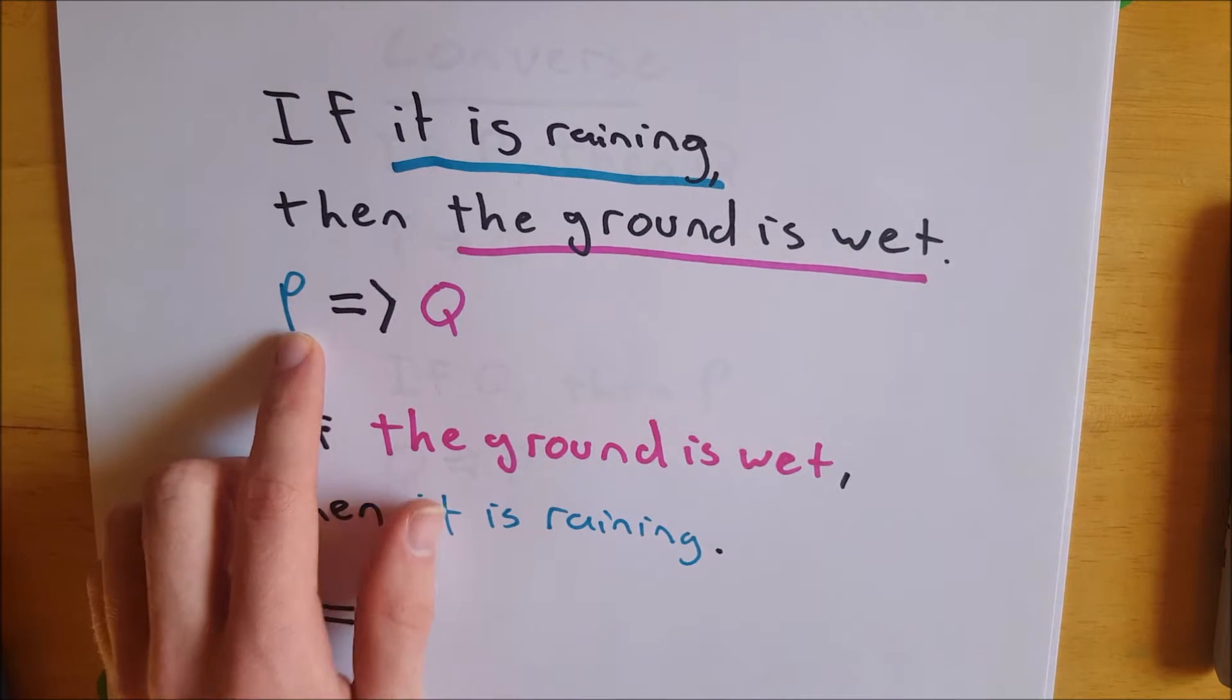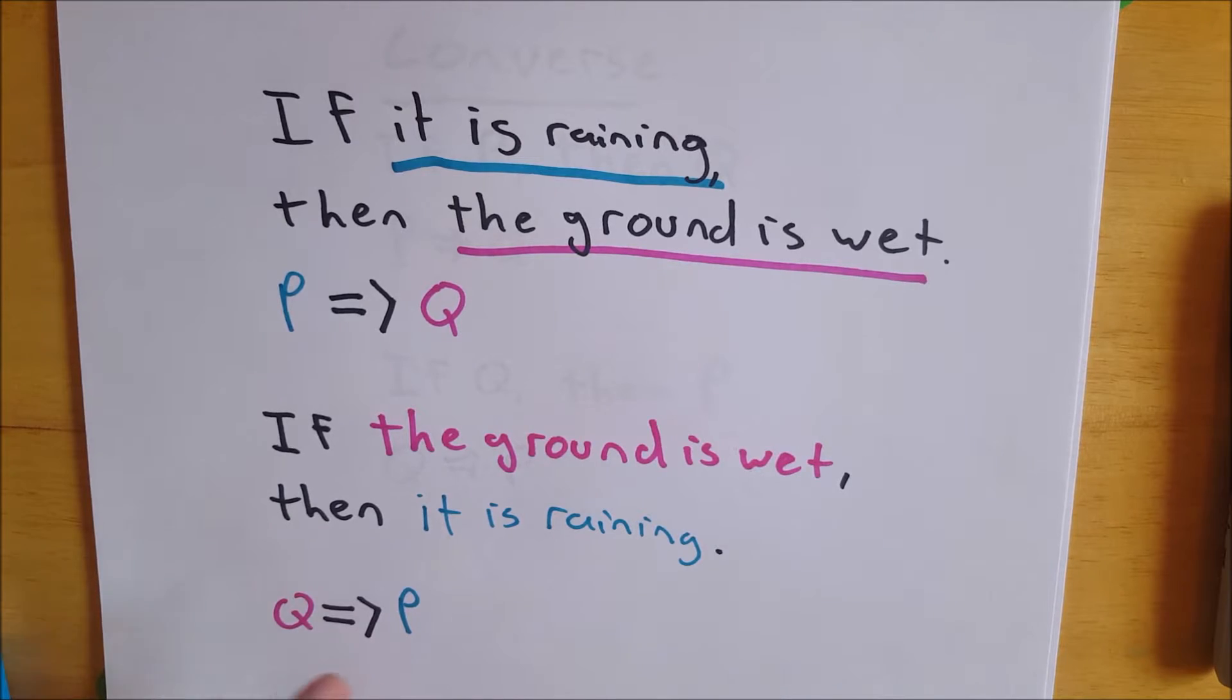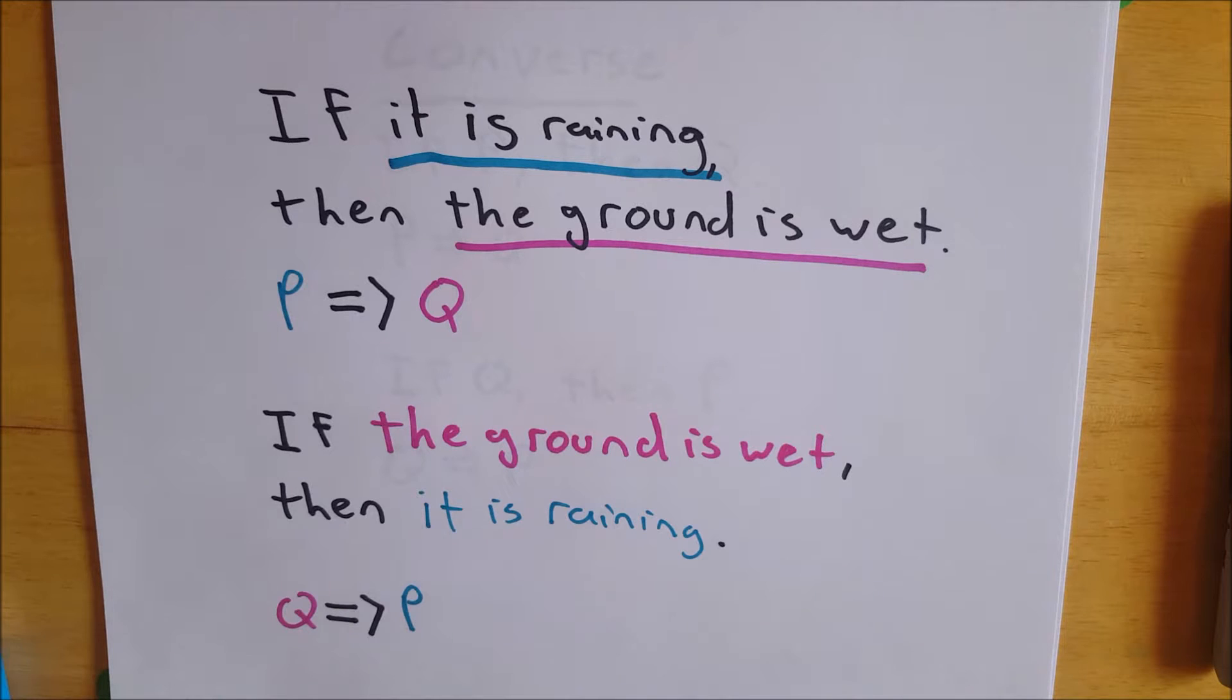So all you got to do, you have your if P, then Q. Just switch them around, you get if Q, then P. If it is raining, then the ground is wet. If the ground is wet, then it is raining.